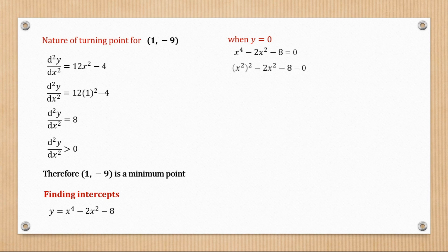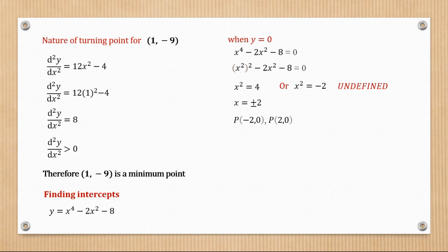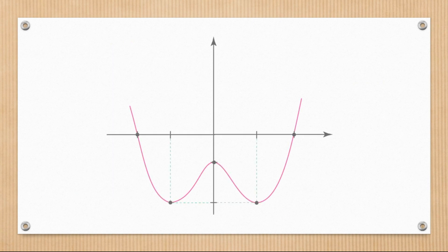For intercepts: when y = 0, solving the equation and treating it as a quadratic in x² gives x² = 4 or x² = -2. The negative value is undefined, so from x² = 4, x = ±2. The x-intercepts are (2, 0) and (-2, 0). When x = 0, y = -8, giving (0, -8). Sketching the curve: there's a maximum at (0, -8) — which coincides with the y-intercept — and two minimum points at (±1, -9).